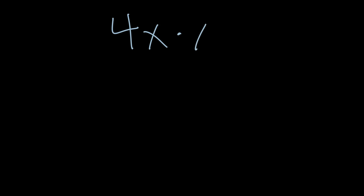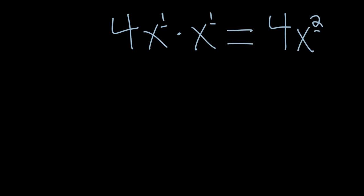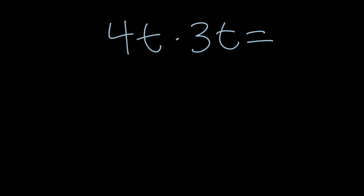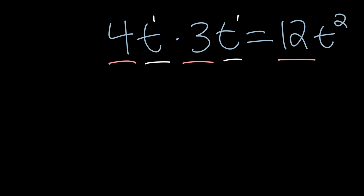Now we're ready to multiply monomials with variables. Take 4x times x — the 4 stands alone since there's no other number to multiply, and x times x equals x squared. Remember, a variable with no exponent is x to the first power, so x to the first times x to the first: add the exponents, one plus one equals two, giving x squared. Moving on: 4T times 3T — four times three equals 12, combining the coefficients, and T times T is T squared, so the answer is 12T squared.